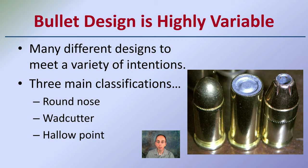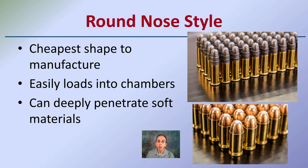We see the round nose, the wad cutter, and the hollow point depicted in this image. The round nose style is the cheapest shape to manufacture, easily loads into chambers, and can deeply penetrate soft materials. We can see two different materials here, but they're both of the same general round nose style.